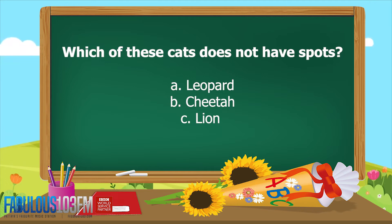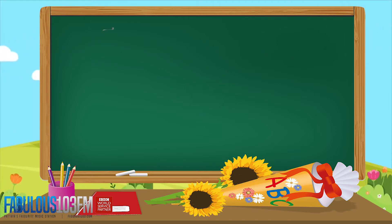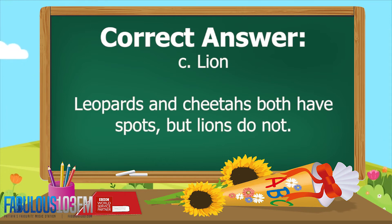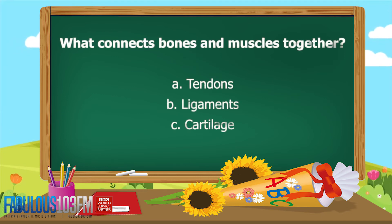Which of these cats does not have spots — a) leopards, b) cheetahs, or c) lions? The correct answer is c, lions. Leopards and cheetahs both have spots, but lions do not.